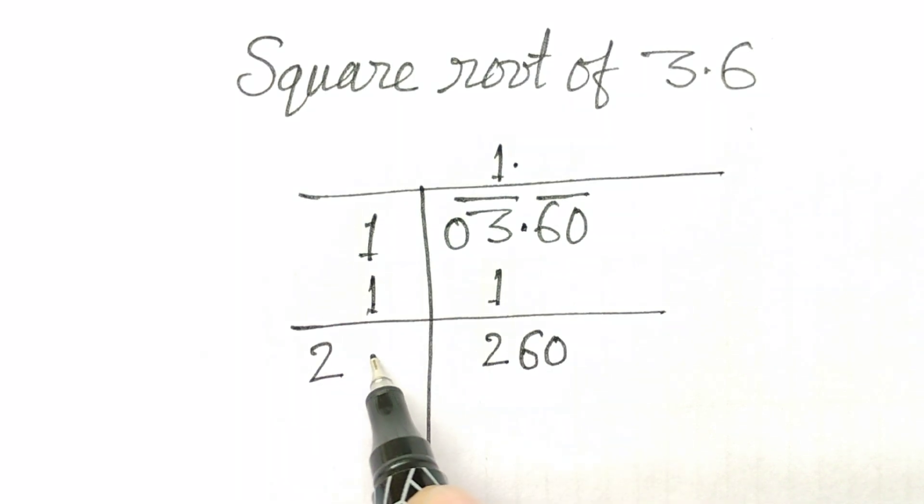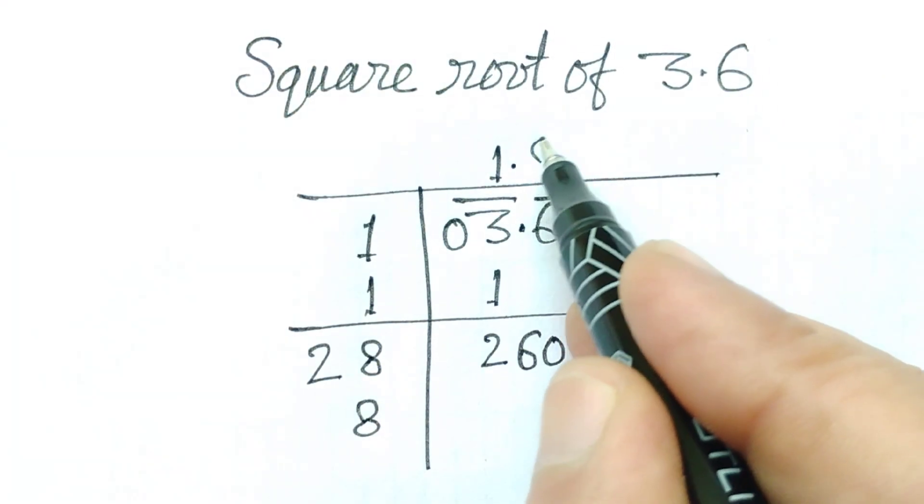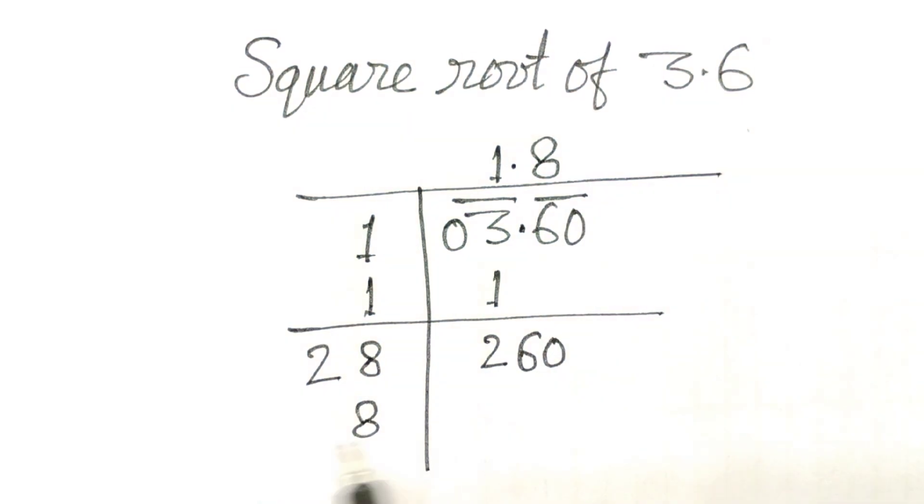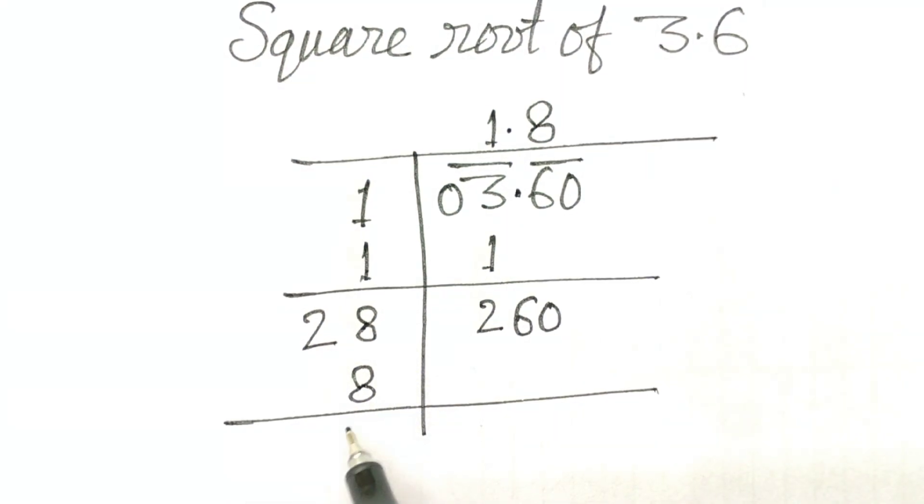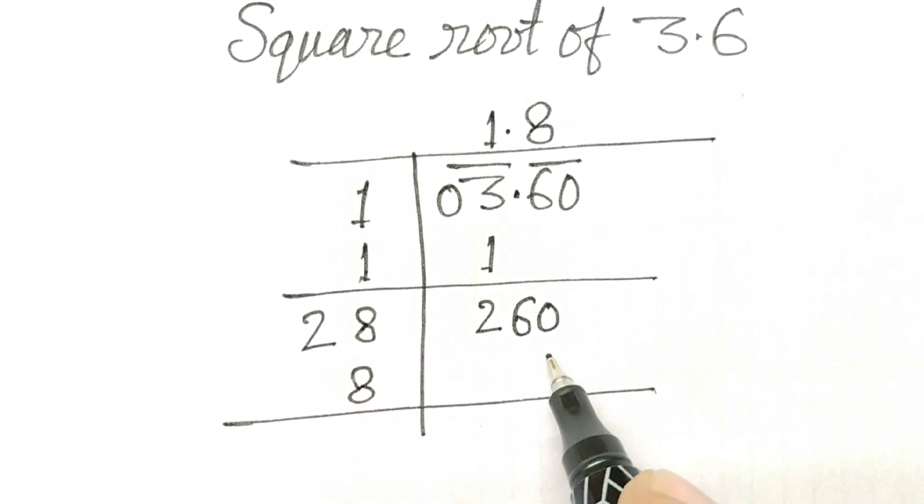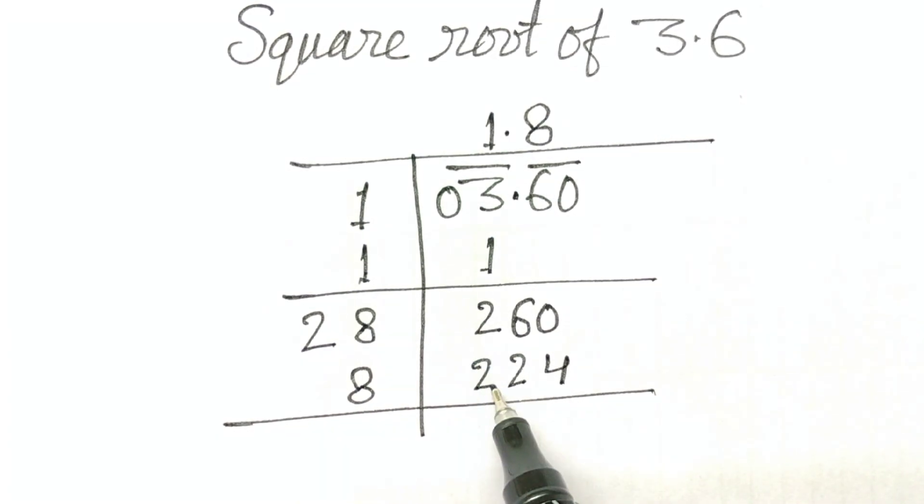2, 8 times. Here 8. And here 8, here also. Now, 28 multiplied by 8. So we get 4, 2, 2.